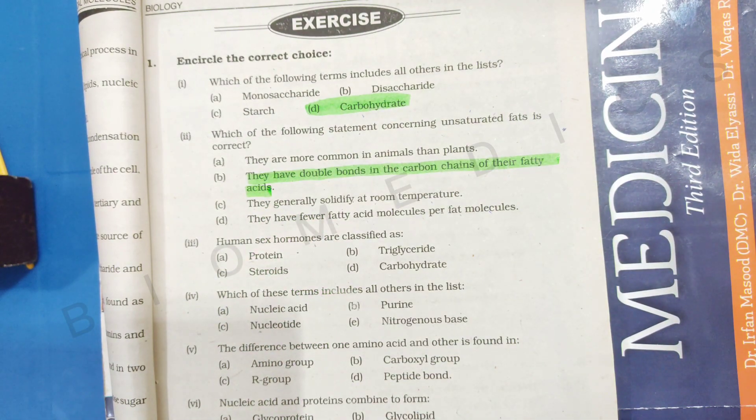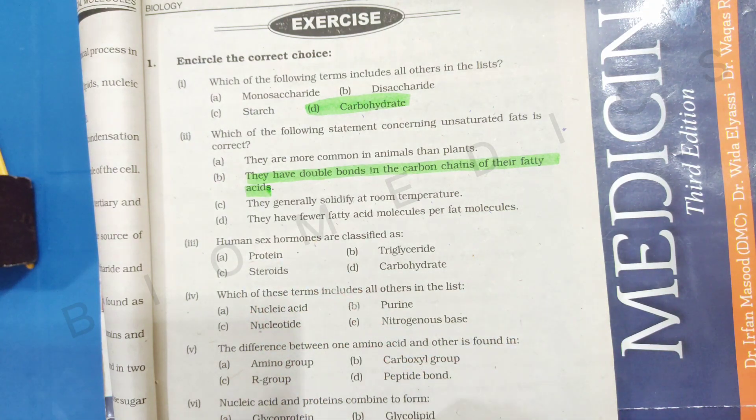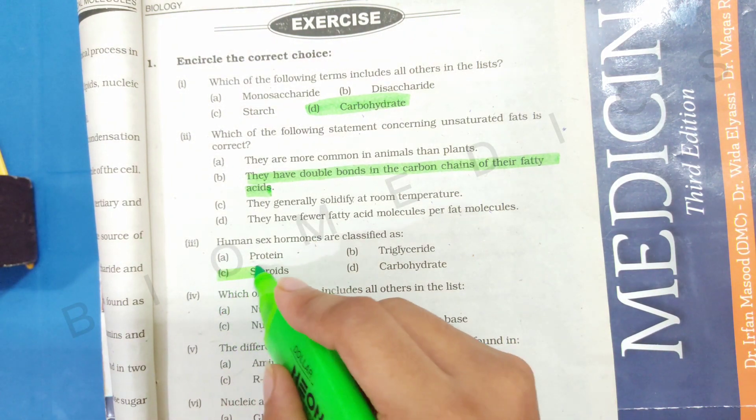After that, you have: human sex hormones are classified as. So you have to remember that human sex hormones, what are their nature? They are steroid in nature. It is written in your book.